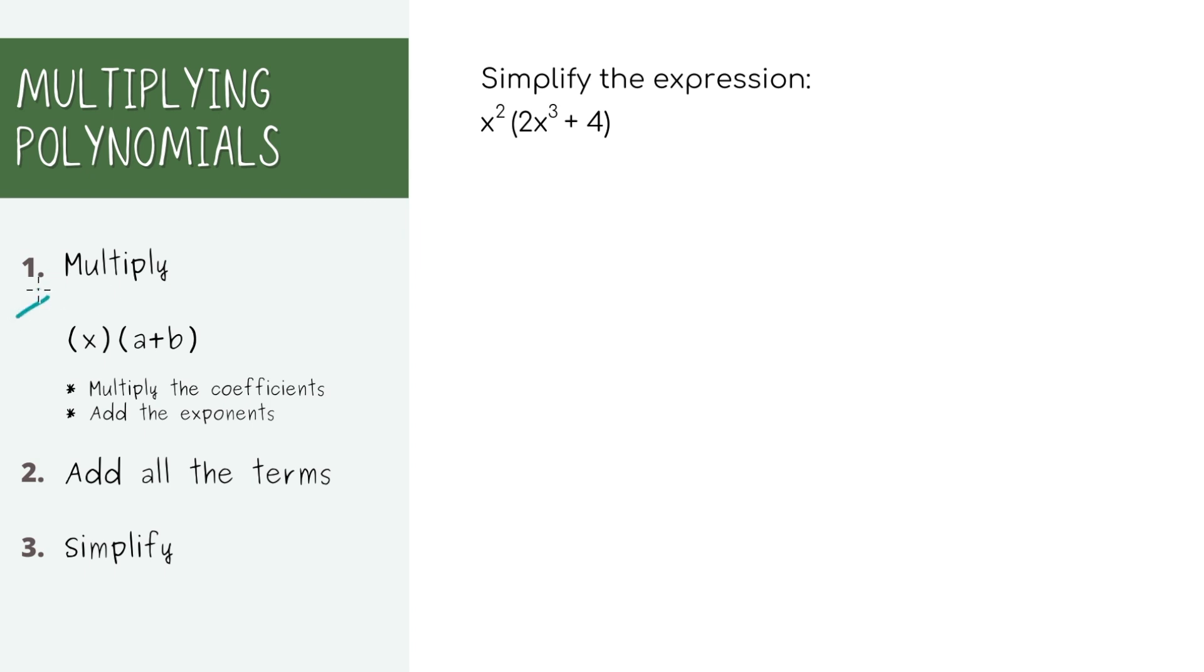The first thing you do is take that first term and multiply it by the first term inside the parentheses. Just remember when you're multiplying, you multiply the coefficients. So 1 times 2 equals 2 and add the exponents when you multiply variables. So 2 plus 3 equals 5.